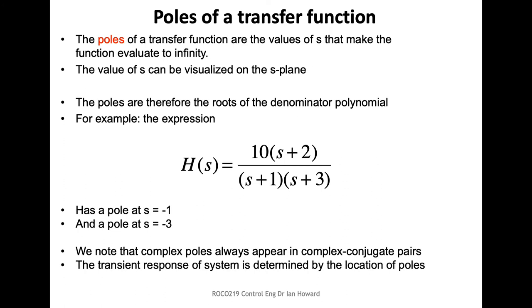We care a lot about poles and zeros because, first of all, we can tell when the system is going to be stable or unstable. And if it's stable, we can also say a lot about the transient response of the system.